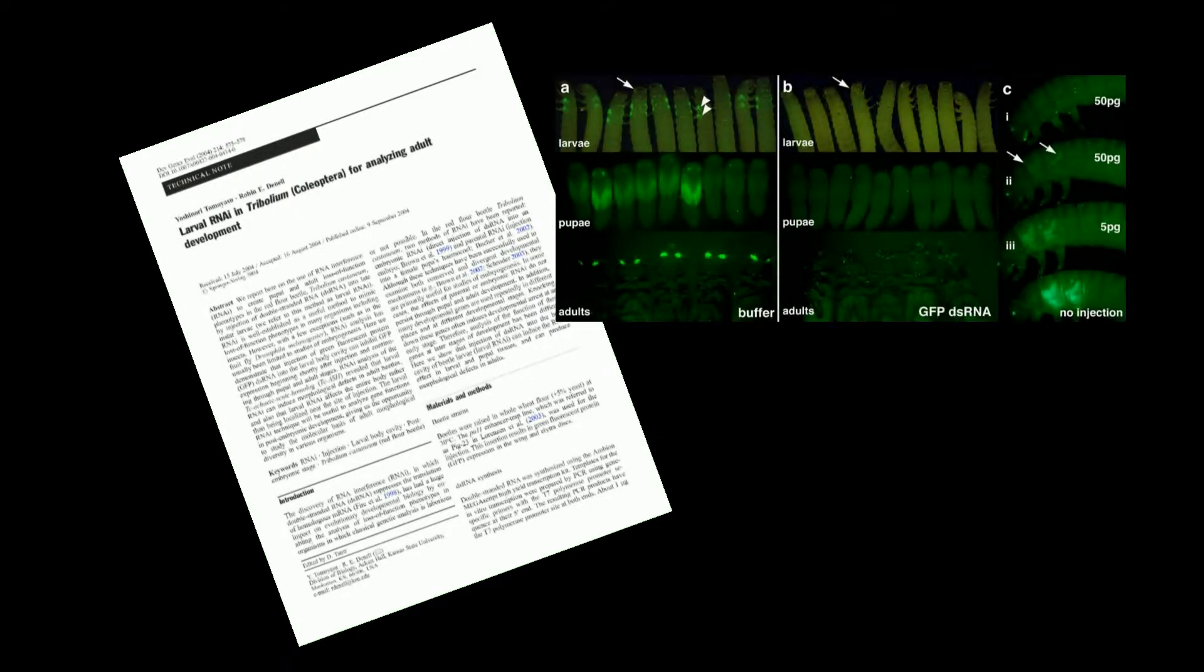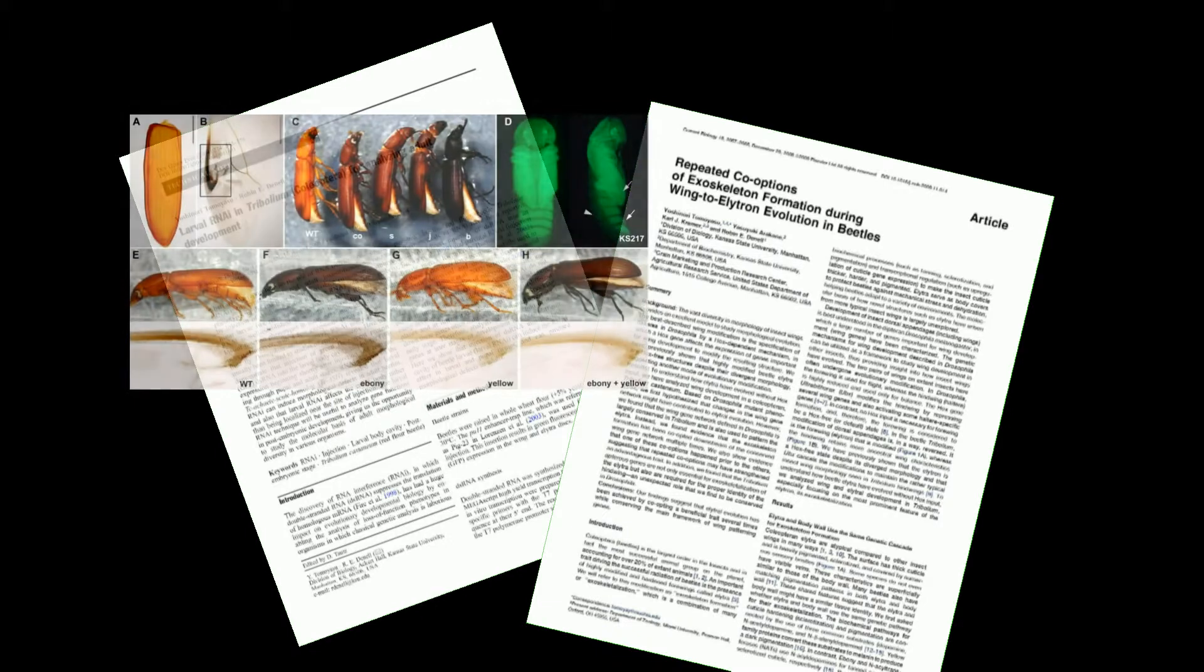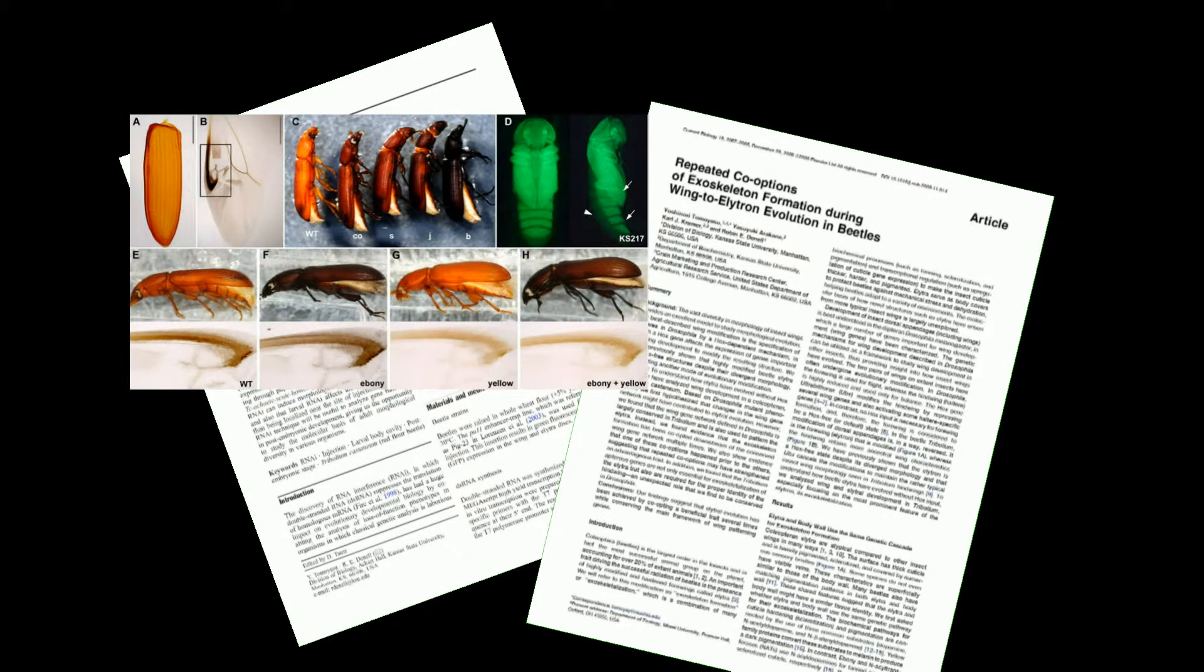As you probably know already if you're watching this video, the double-stranded RNA is processed in vivo to become small interfering RNAs, which perform the task of RNA interference, effectively knocking down the targeted gene function. Yoshi and his lab have demonstrated just how useful this injection technique can be in studying gene expression in Tribolium.